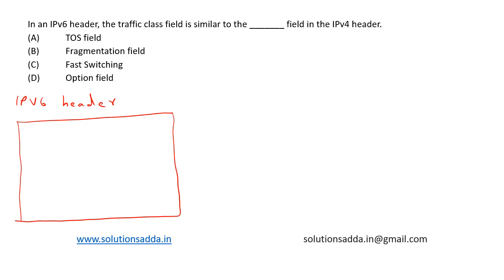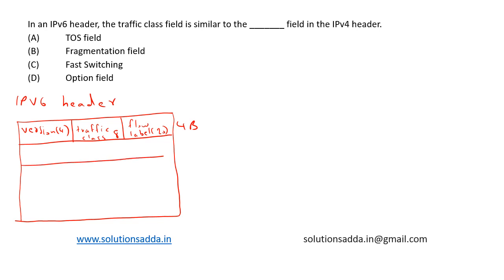In the IPv6 header, the first row includes version, which is 4 bits, then we have traffic class which is 8 bits, then flow label which is 20 bits — so this first row is 4 bytes total. Next we have payload length which is 16 bits, then next header which is 8 bits.